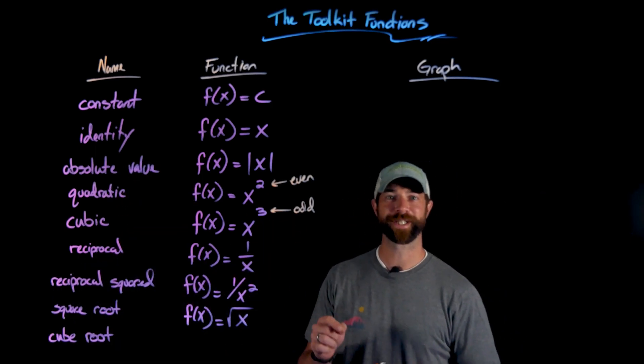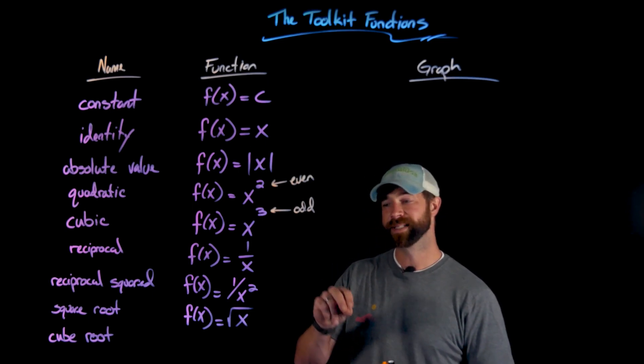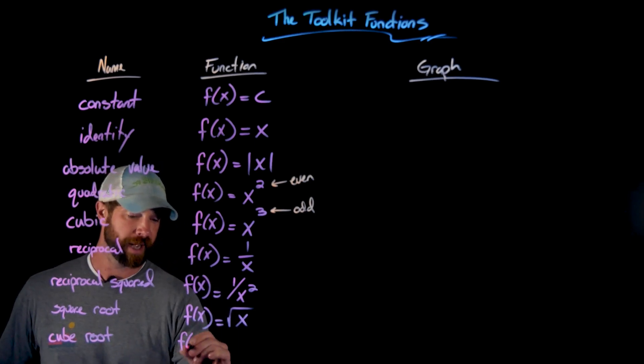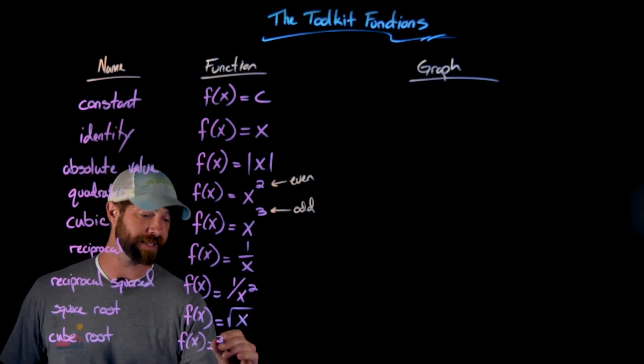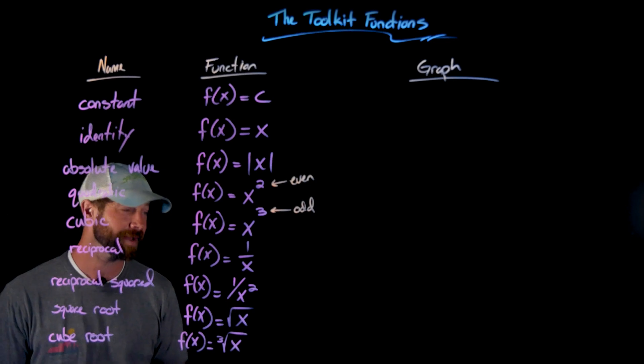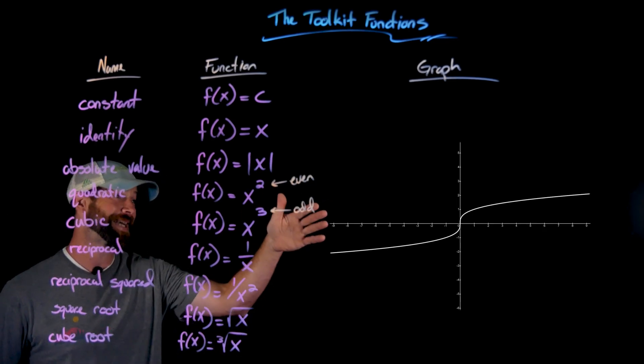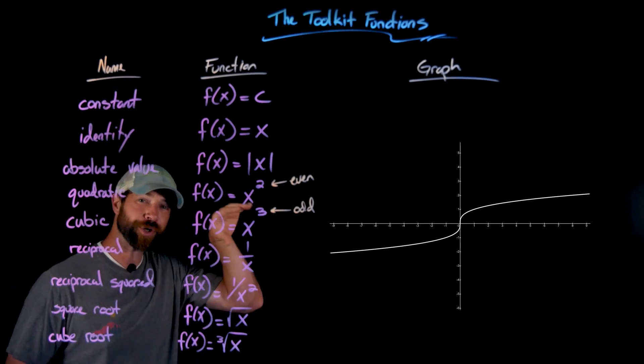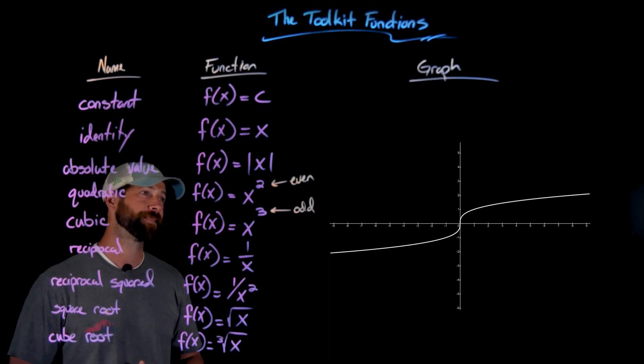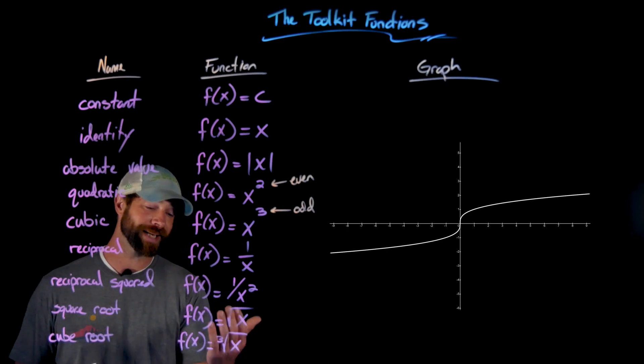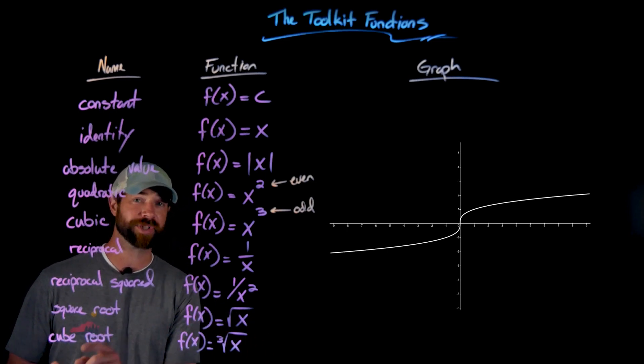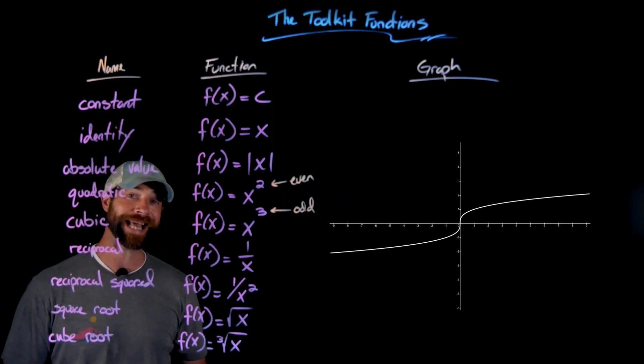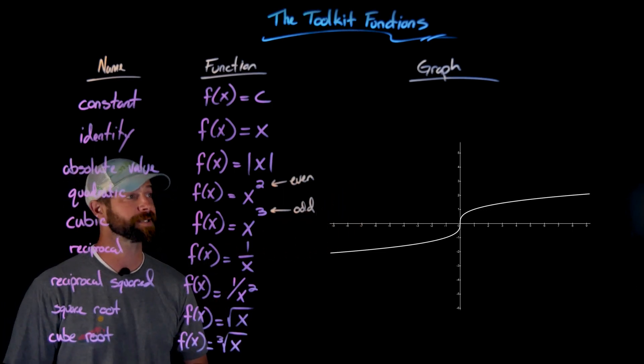Finally, we have the cube root function. This is another radical function, but instead of an index of two for the square root, we have the cube root. One thing you'll notice—this is very similar to the conversation I just had—is that this graphical representation of the cube root of x looks very similar to a cubic that's been turned on its side. And importantly, since we can apply the cube root to negative values, unlike the square root function, this graphical representation continues on the negative part of the x-axis.